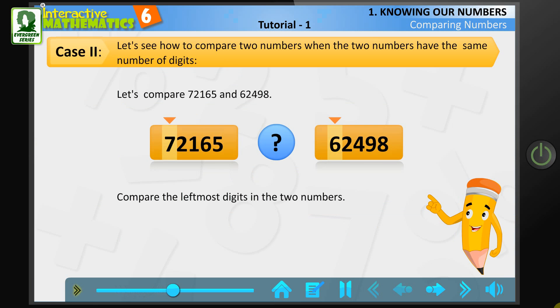Compare the leftmost digits in the two numbers. The number with greater digit at the leftmost place is greater. Since 7 is greater than 6, 72,165 is greater than 62,498.